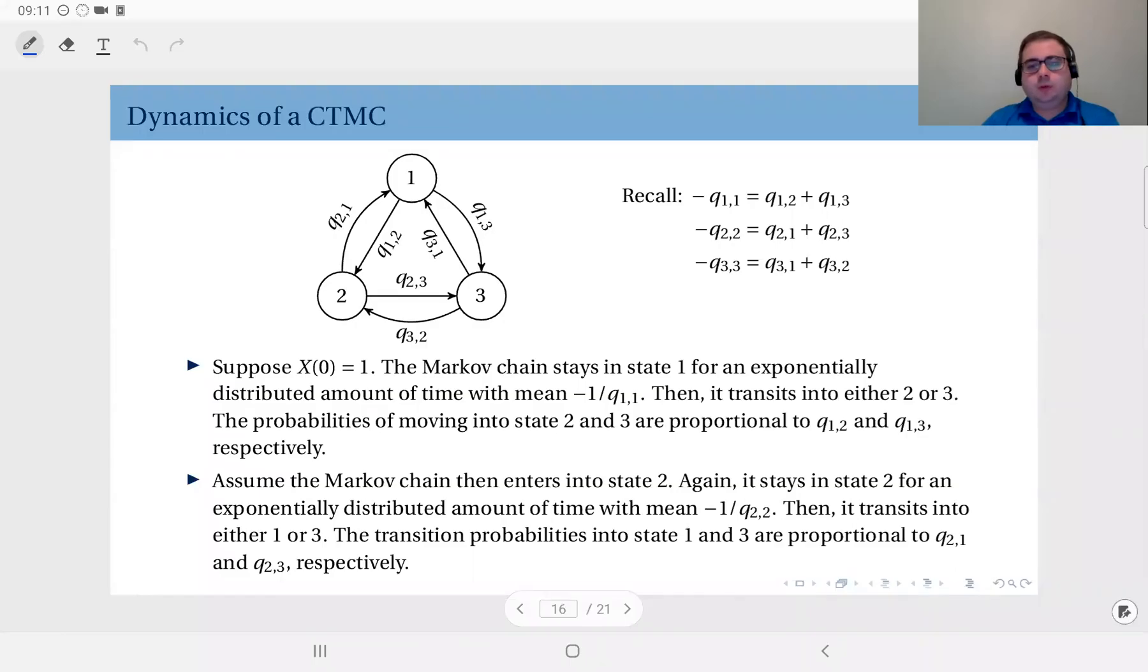Now based on all this, we should understand the dynamics of a continuous time Markov chain, dynamics in the sense of how it behaves within time. So let's say we have a three-state continuous time Markov chain here, and we have these transition rates: Q sub 1 2, Q sub 1 3, Q sub 2 1, 2 3, 3 1 and 3 2.